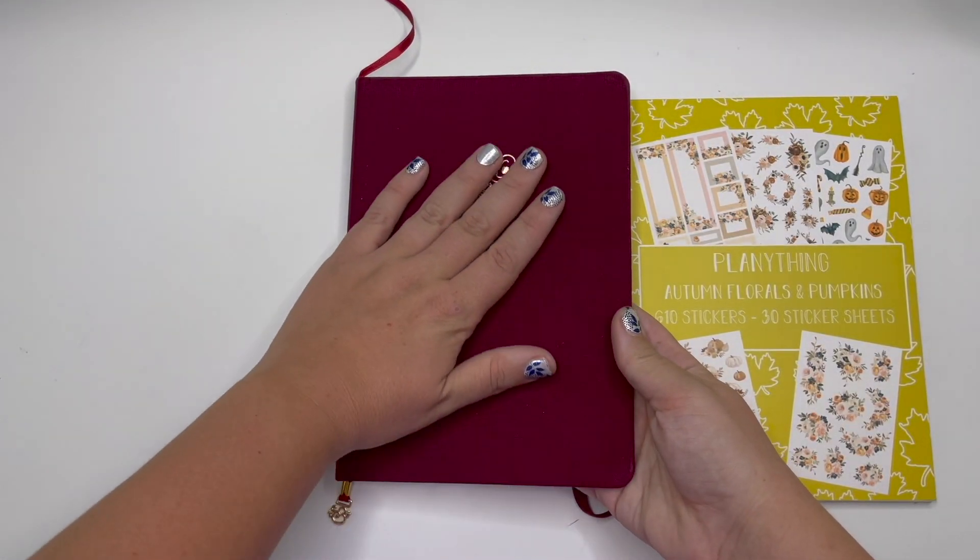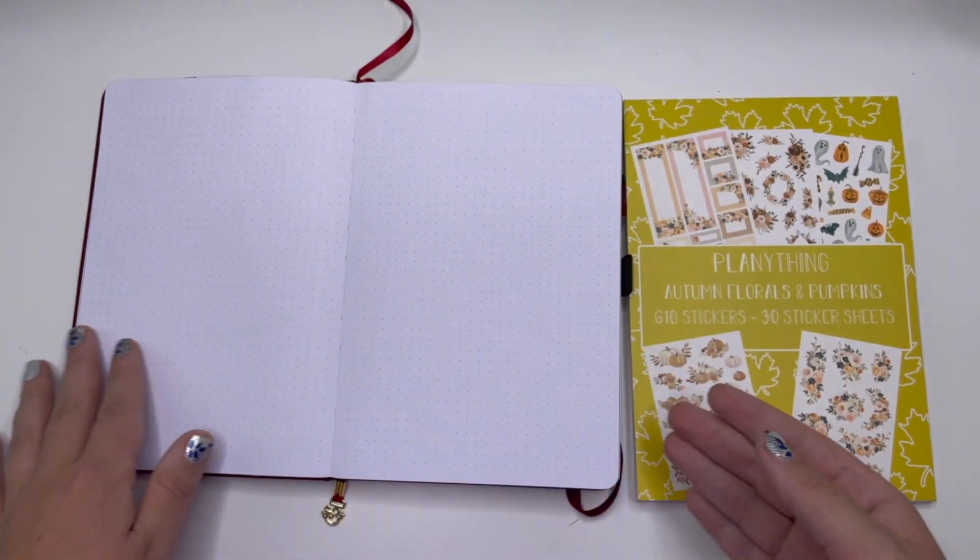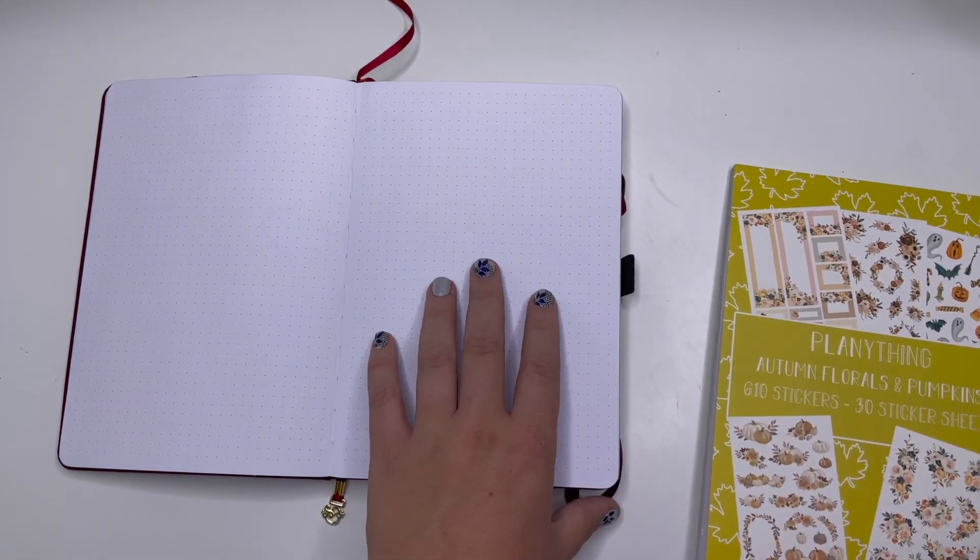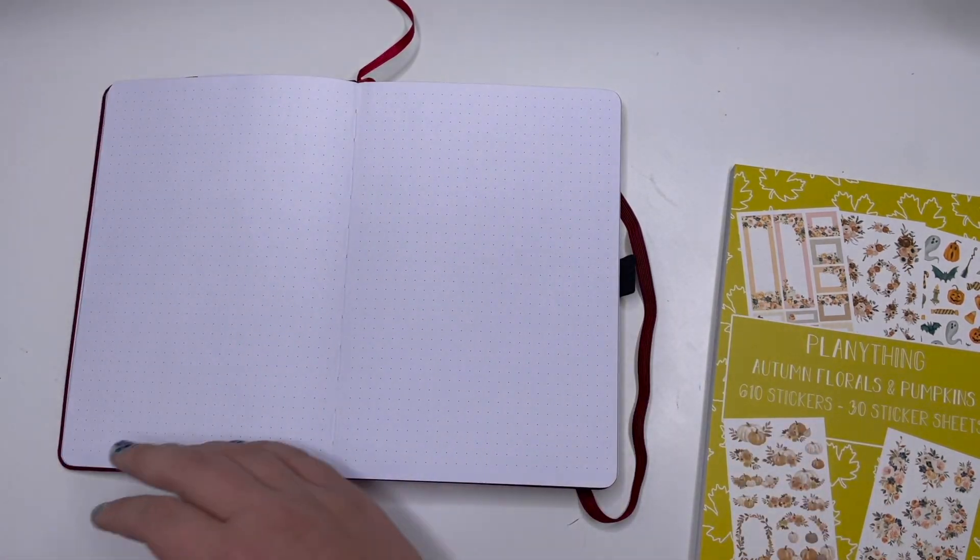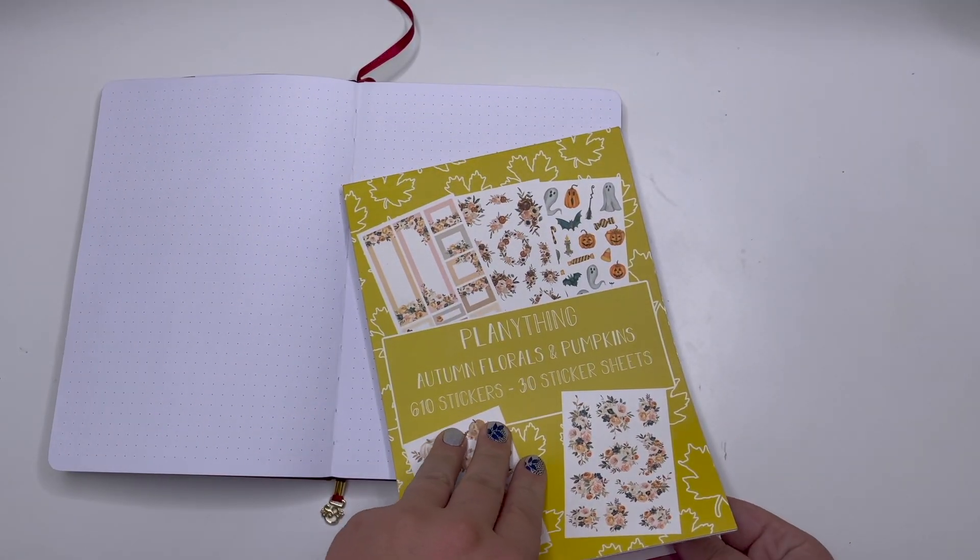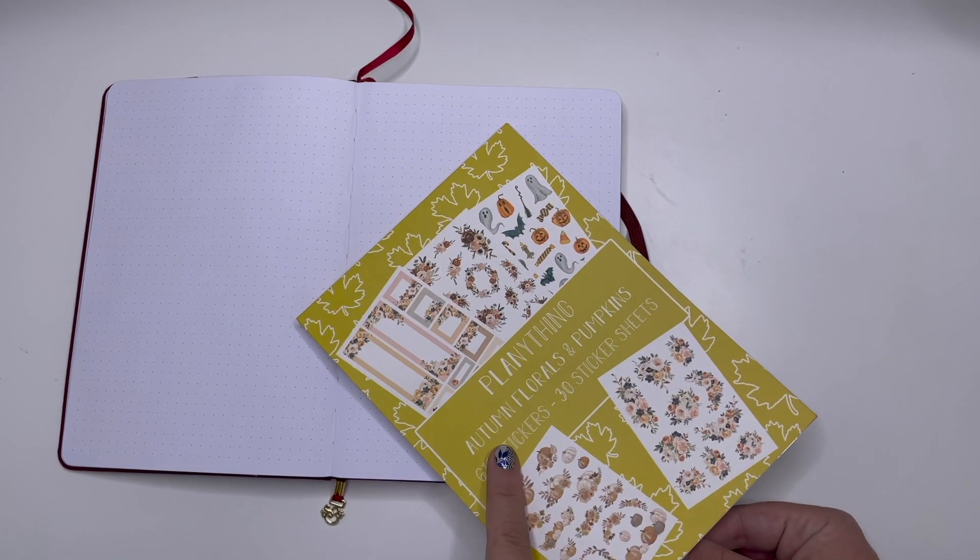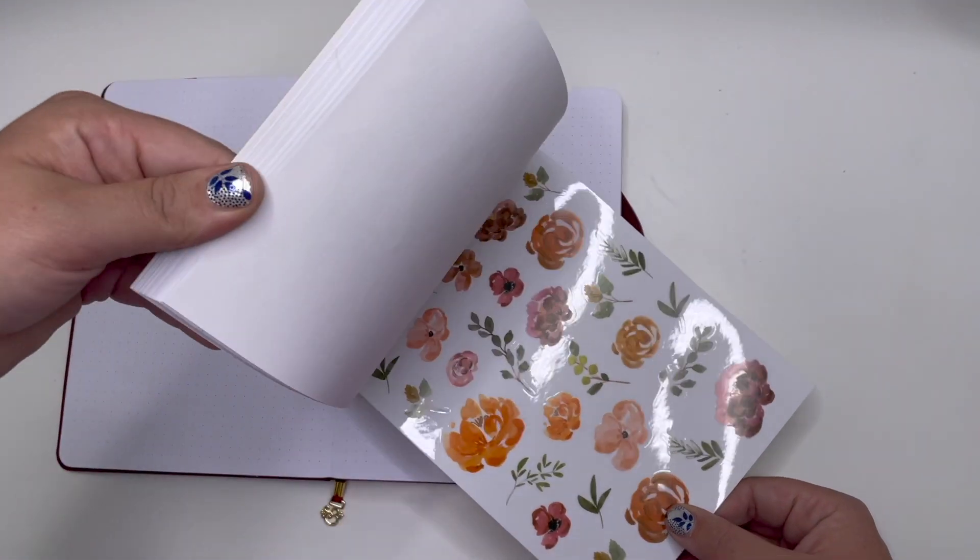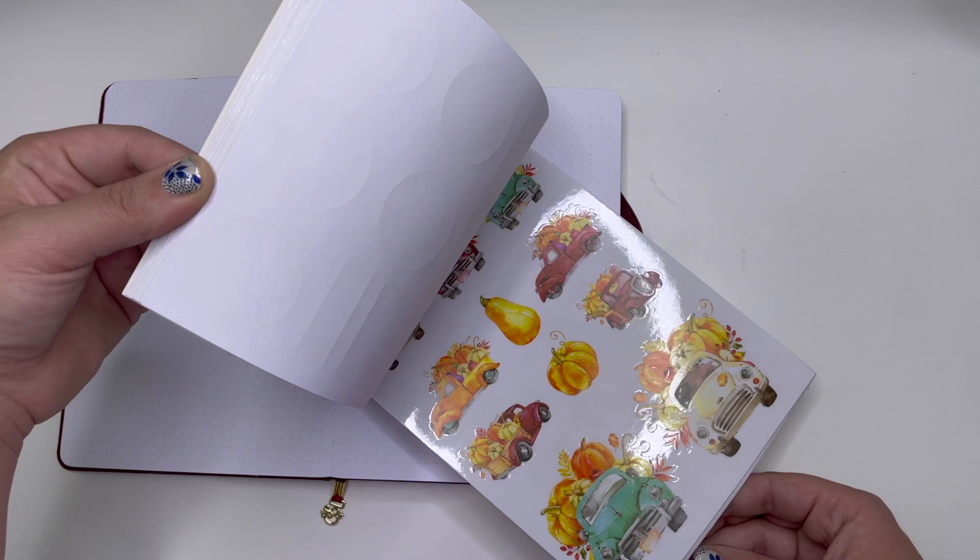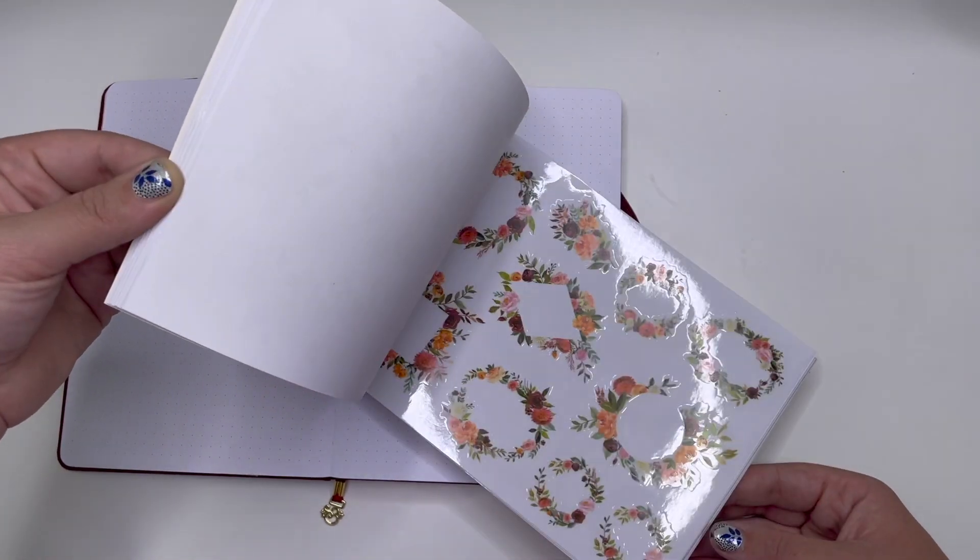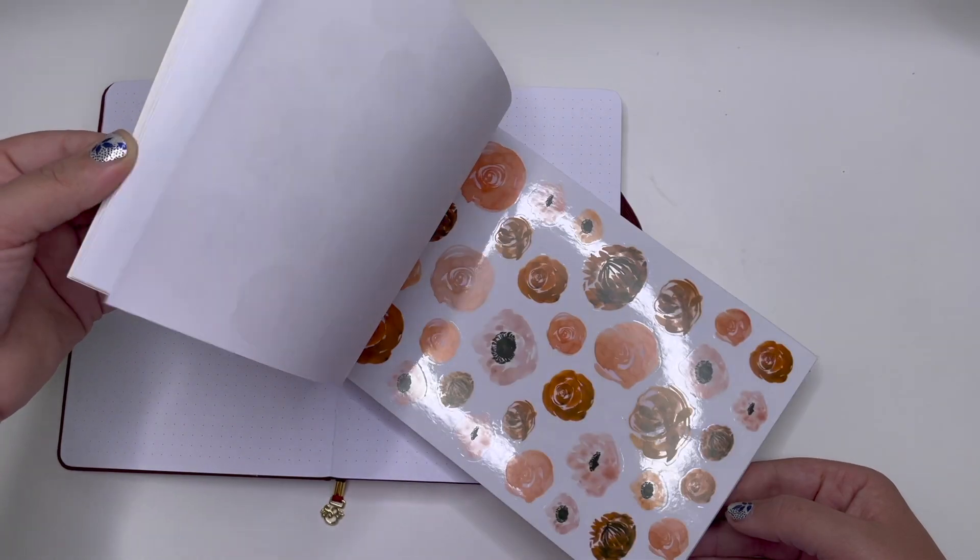This Archer and Olive notebook is really, really pretty and it's been really fun to journal in here. I've been really enjoying it, so I'm glad that I get to do it again. This week I'm using Plan Anything stickers from her Autumn Florals and Pumpkins sticker book.